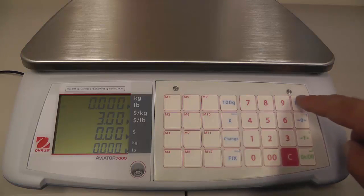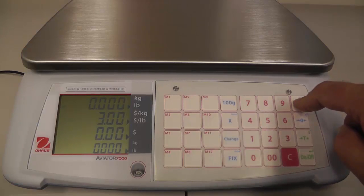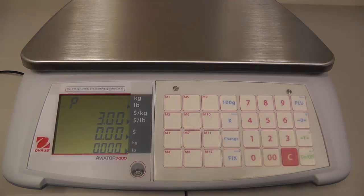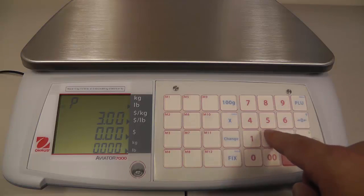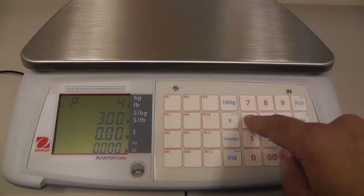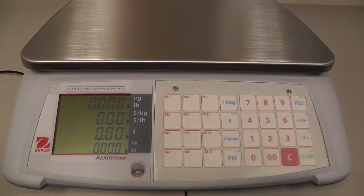Then we'll choose a PLU number that we want to save this as. We'll press and hold the PLU button and you can see it had a long beep and there's a P up in the left corner of the display. We'll just say it's PLU number 44 and the scale saved it.